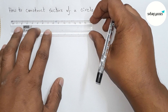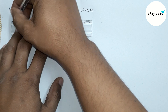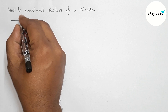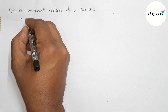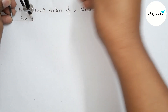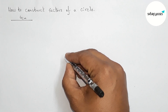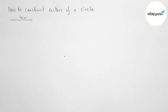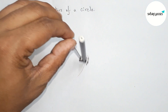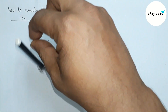First, we'll draw the radius of the circle. Here we're taking 4 centimeters as the length of the radius — you can choose another value as your choice. Now taking this length with the help of a compass, and next taking a point as the center of the circle and placing the compass on that center point with the length of 4 centimeters.